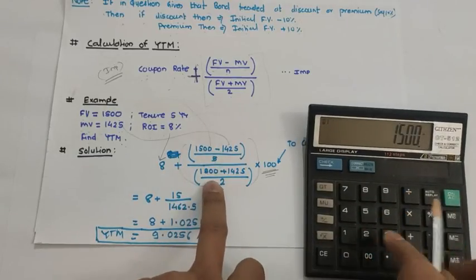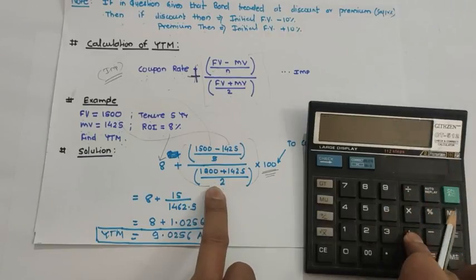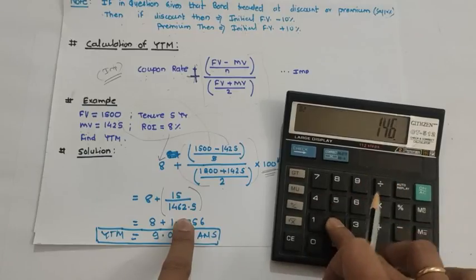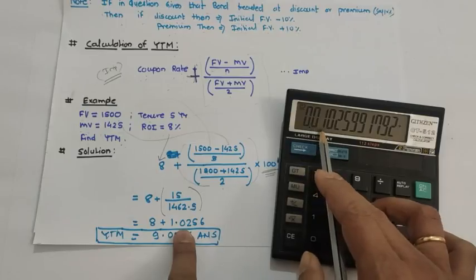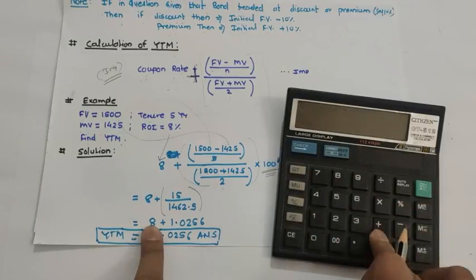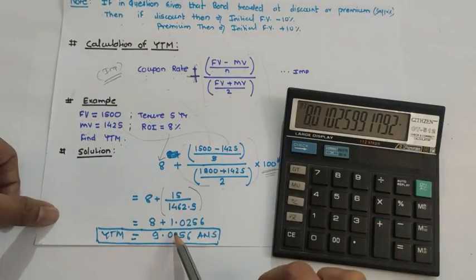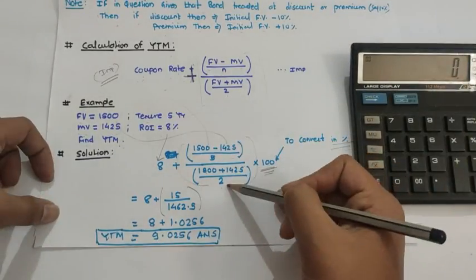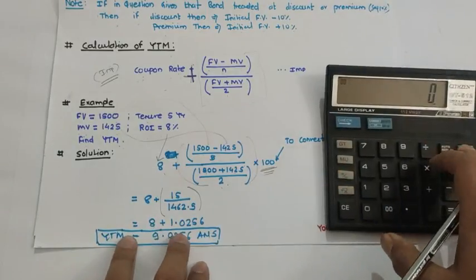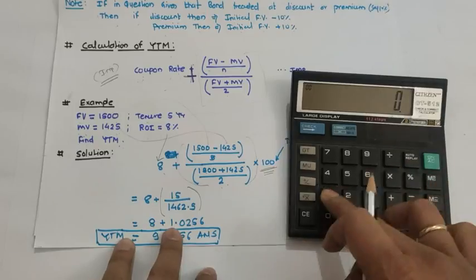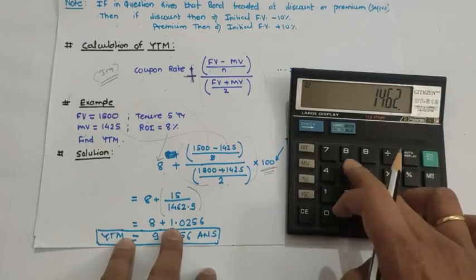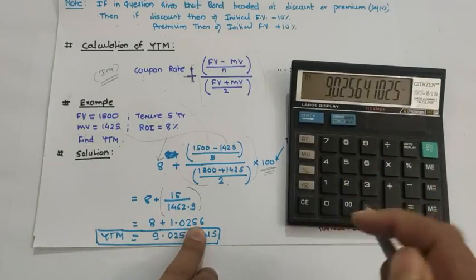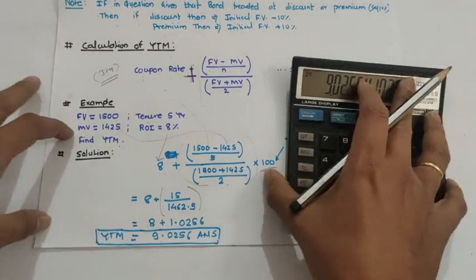Face value plus market value: 1,500 plus 1,425 equals 2,925, divided by 2 equals 1,462.5. Now solve: 15 divided by 1,462.5 gives 0.01026, multiplied by 100 gives 1.026. Add the coupon rate of 8: you get 9.0256 as your YTM answer. This type of question with all terms given is generally asked for three marks.